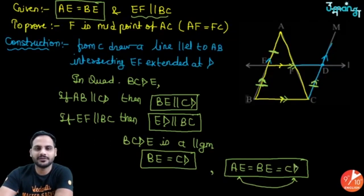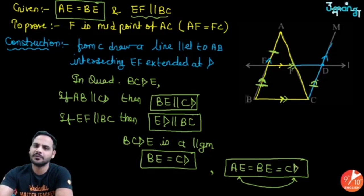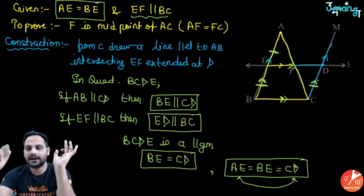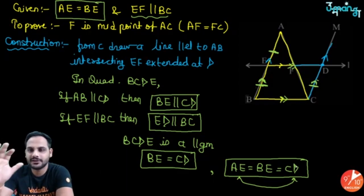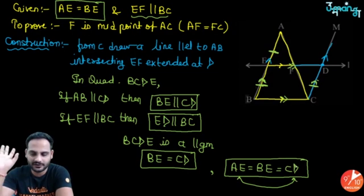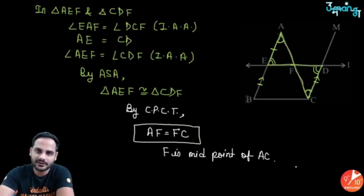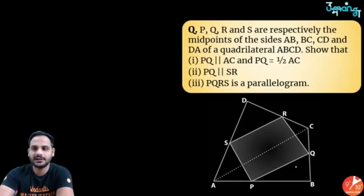Practice the proof two or three times to get the pattern. Remember the diagram and the construction — after that, connecting everything becomes very easy. This completes the midpoint theorem and its converse, with proofs.